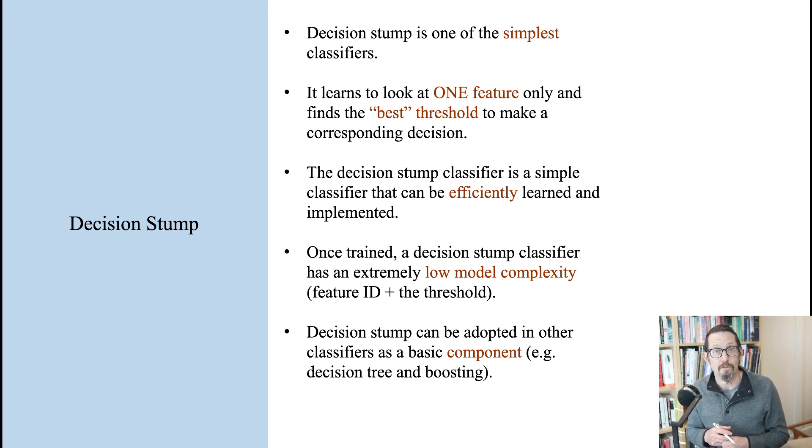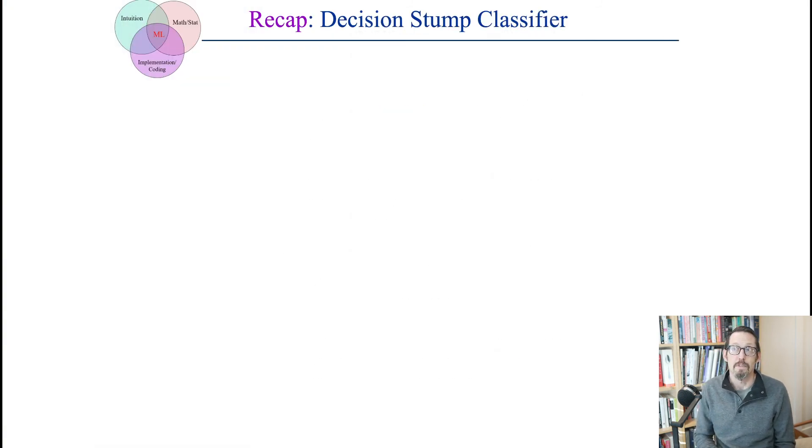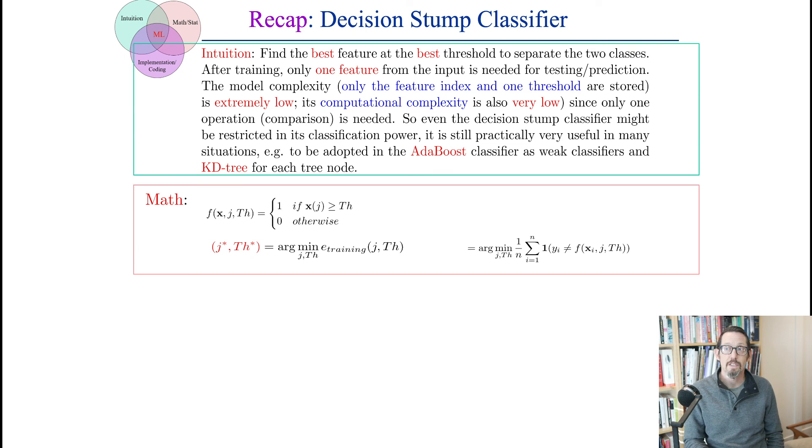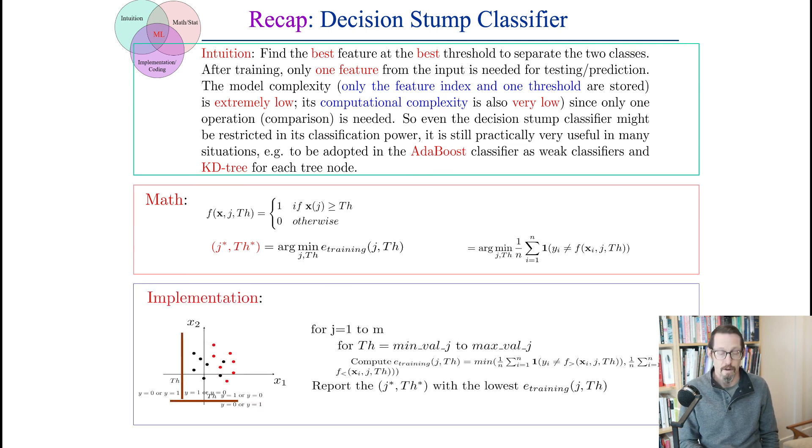The stump finds the best threshold of the best possible feature to separate two classes. It's a low-complexity model. I'm sorry, I really should have edited this slide because computational complexity is not very low with the number of dimensions or the number of steps. It becomes useful for various things such as AdaBoost and KD tree, which we've already seen when we talked about K-nearest neighbors and one of the algorithms for doing nearest neighbors when there is a terribly high number of data points and dimensions. The stump is pretty simple notation-wise and the implementation is fairly obvious once you think about it.